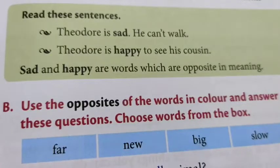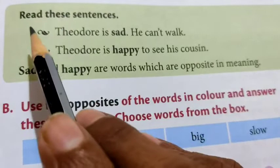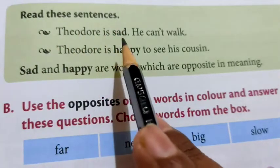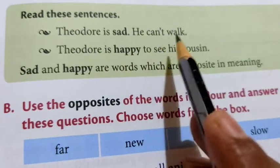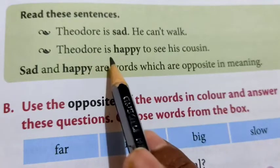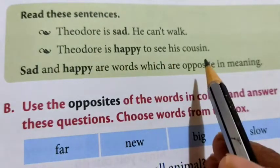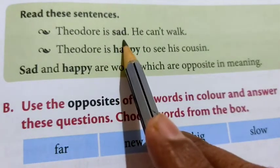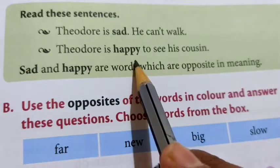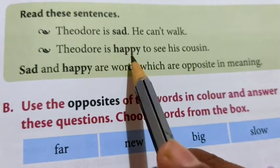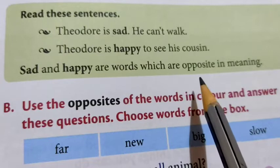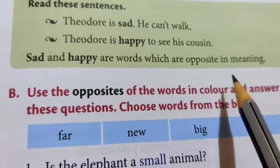Come to page number 29. Listen and read these sentences: Theodore is sad. He can't walk. Theodore is happy to see his friend. Now listen to these two words: sad and happy. Sad is the opposite of happy, and happy is the opposite of sad. Sad and happy are words which are opposite in meaning.